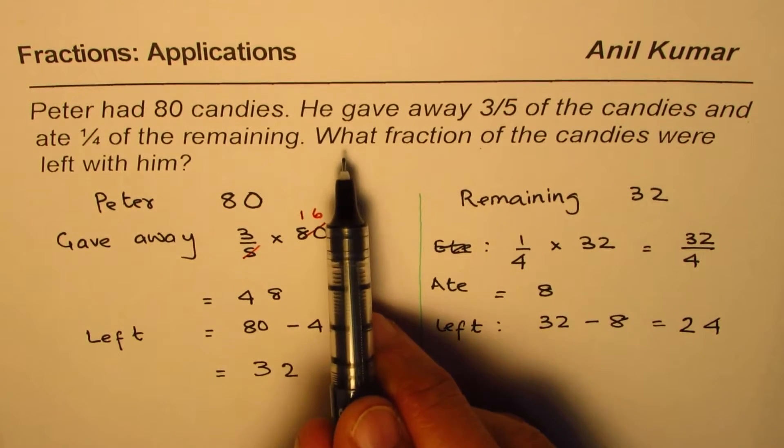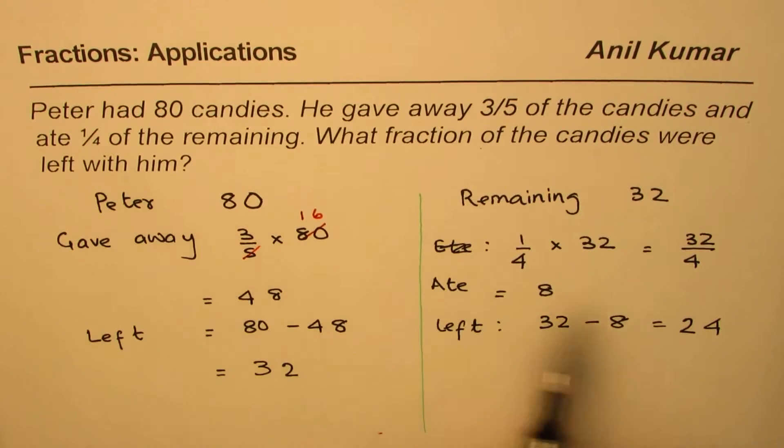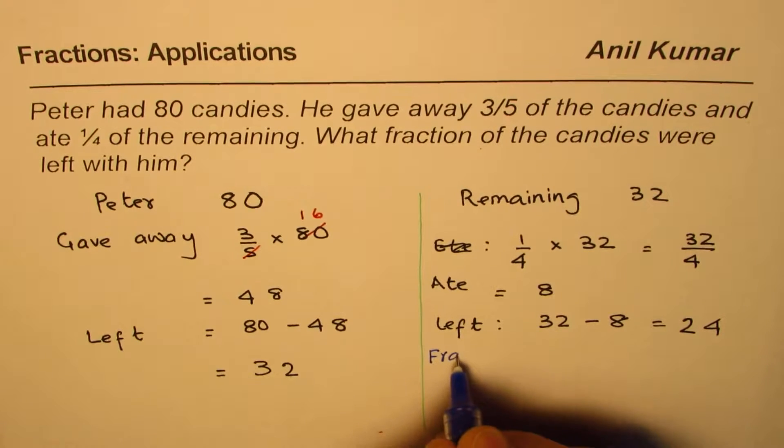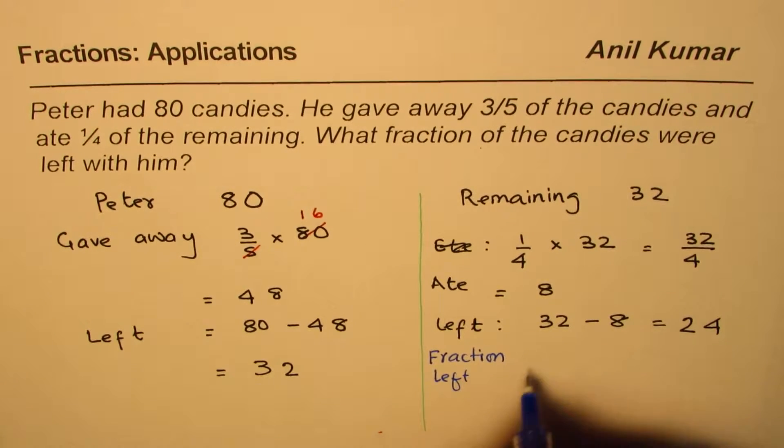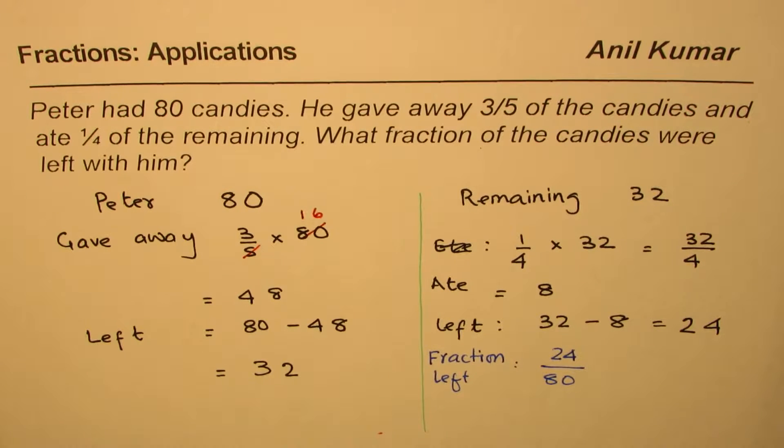Now the question is, what fraction of the candies were left with him? So 24 are left from 80. That is important. So let's calculate the fraction part. Fraction left is 24 out of 80. That is the fraction which is left.